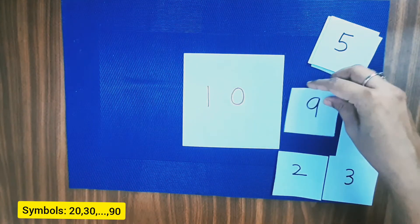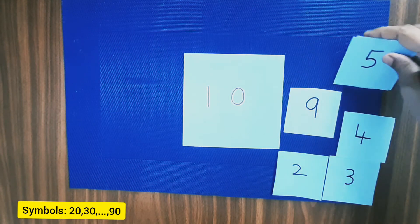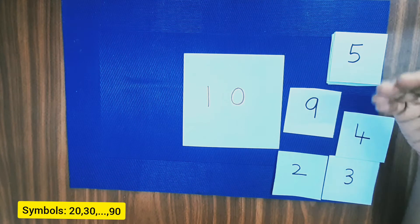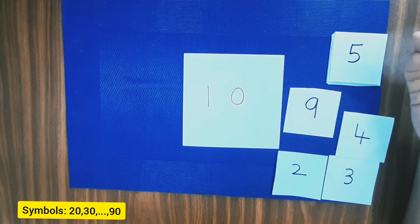Now this is period 1, where we have introduced the symbols for 20, 30, 40 till 90.